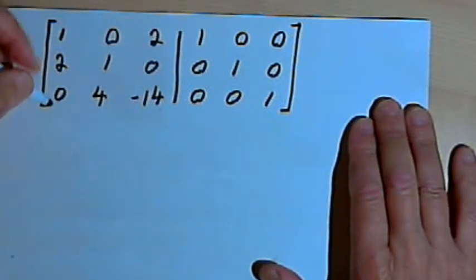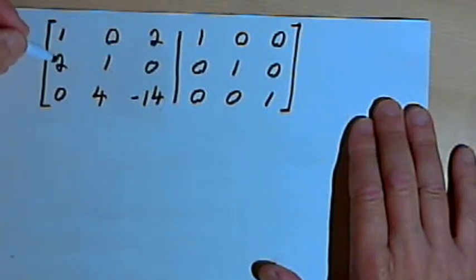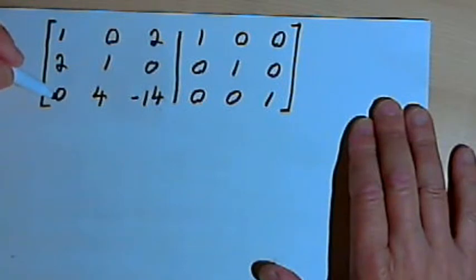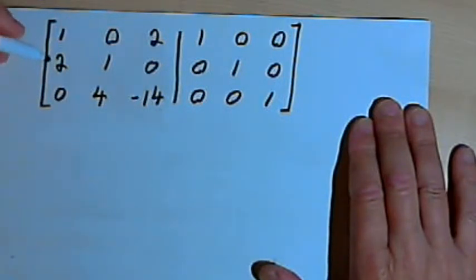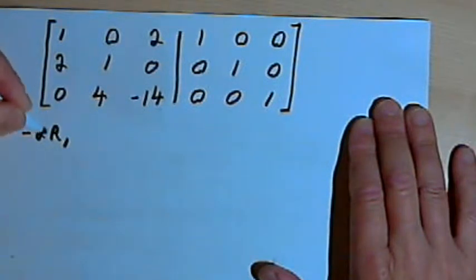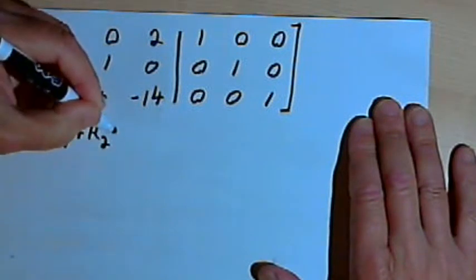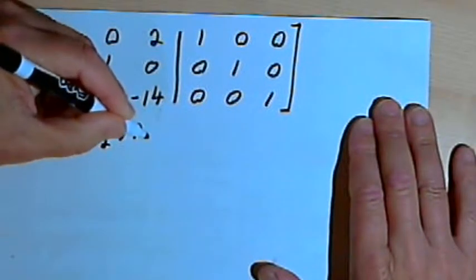When we do Gauss-Jordan, we start with the first column. We want the element in the first row, first column to be a 1, which it is, and then we want everything else in that column to be a 0. In the third row I've got a 0, but in the second row I've got a 2 in that column. So what I'm going to do is take the first row and multiply it by negative 2 — that's negative 2 times row 1, added to row 2 — and that will become the new row 2.